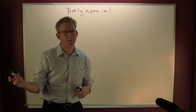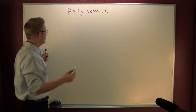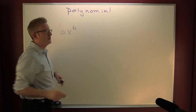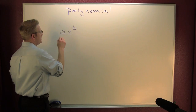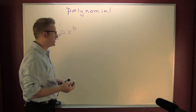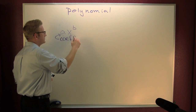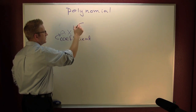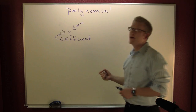A polynomial is the sum or difference of monomials. A monomial is of the form where it has a single term. The number in front of the variable part is the coefficient. The superscript on the variable part — that's your exponent.